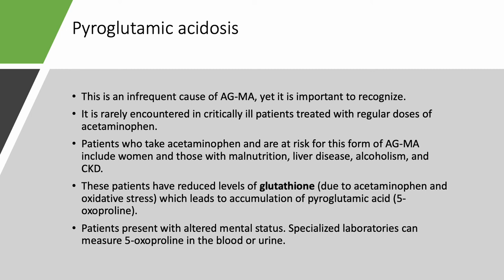Pyroglutamic acidosis is not a common cause of anion gap metabolic acidosis. It is rarely seen in critically ill patients even with regular doses of acetaminophen. Patients at risk are those with malnutrition, liver disease, alcoholism, and chronic kidney disease. In these patients with reduced glutathione, acetaminophen administration leads to accumulation of pyroglutamic acid (5-oxoproline), causing mental status changes. Measurement requires a specialized lab and can be done in blood or urine.